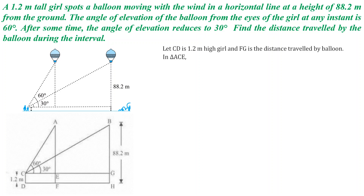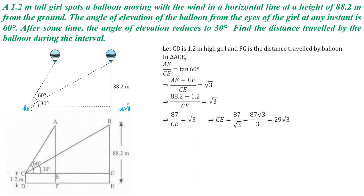In triangle ACE, tan 60 degrees equals perpendicular by base, that is AE upon CE. Tan 60 is root 3. Now AE can also be written as AF minus EF. AF is 88.2 meters and EF is 1.2 meters, so AE equals 87 meters. Using these dimensions, the value of CE will be 87 divided by root 3, which when rationalized gives 29 root 3. So 29 root 3 is the value of CE.